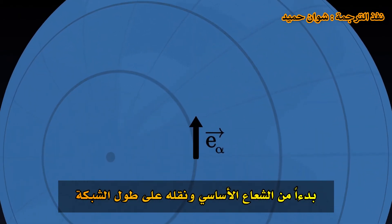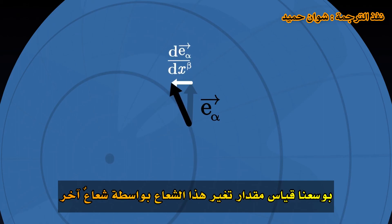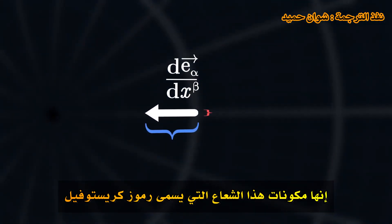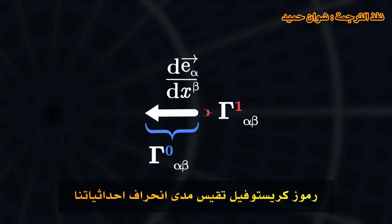Starting from a basis vector and transporting it along the grid, we can measure how much this vector changes by another vector. It's the components of this vector that are called Christoffel symbols. The Christoffel symbols measure the extent to which our coordinates deviate from straight lines along the grid.